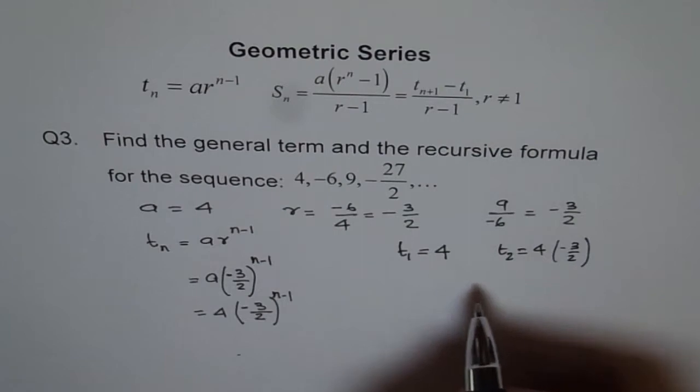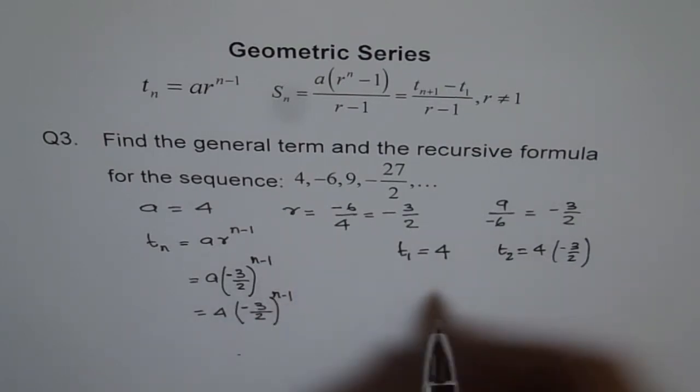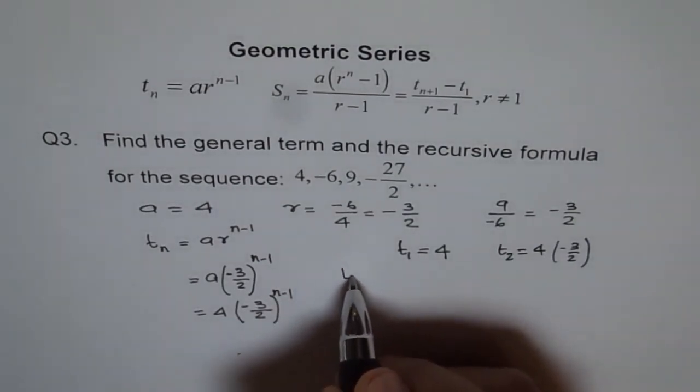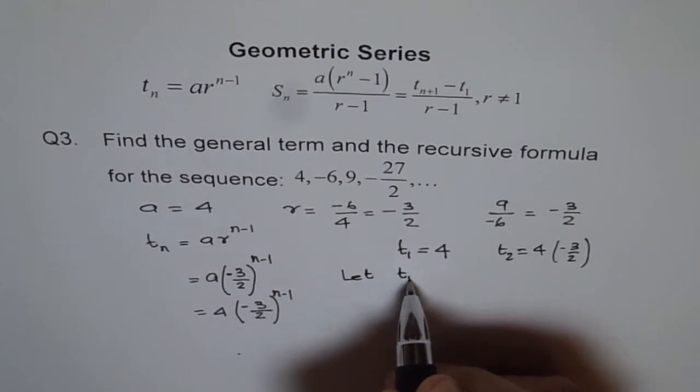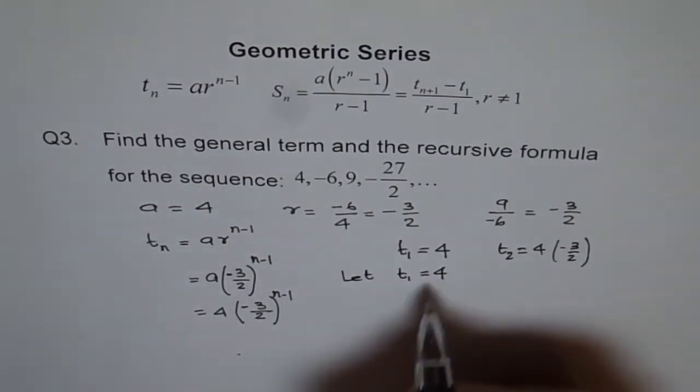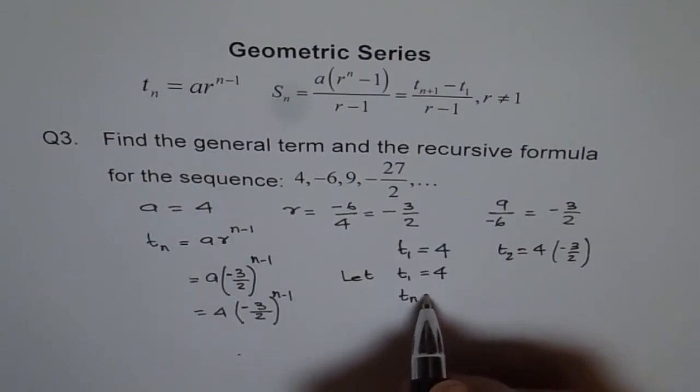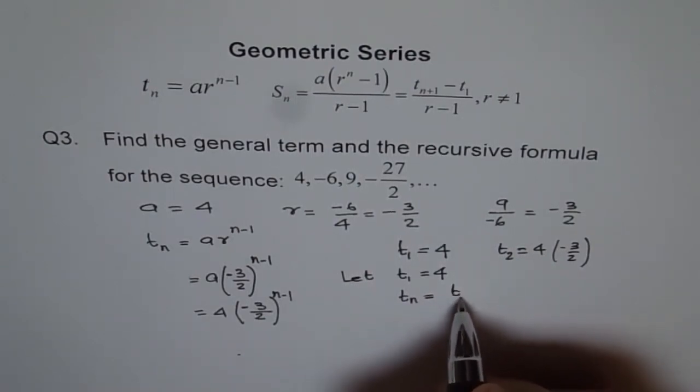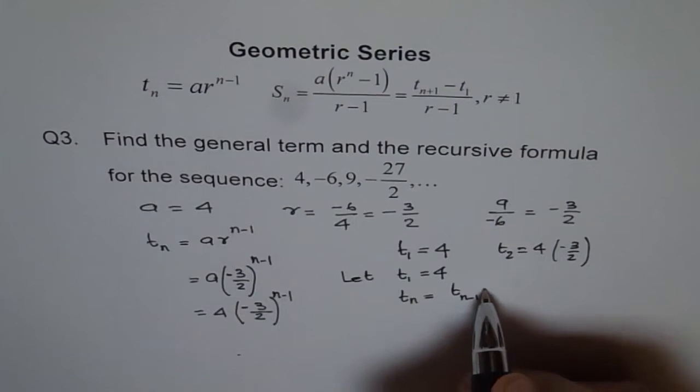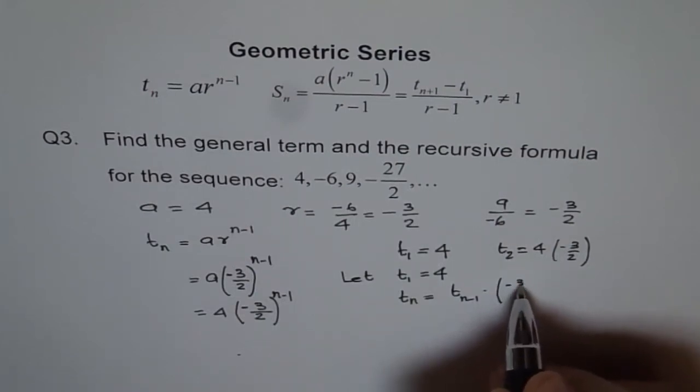Therefore, you can write recursive formula as let T1 equals 4. Then Tn equals Tn minus 1 times minus 3 by 2.